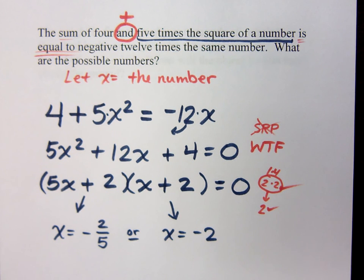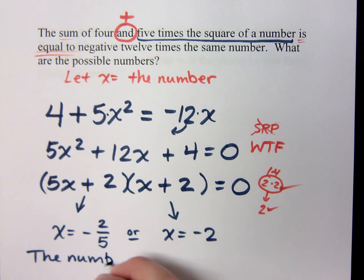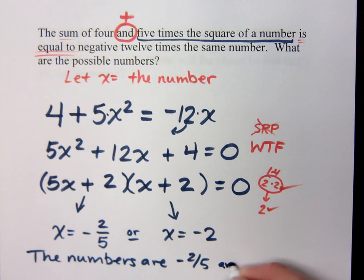And there's no real-world problem that I have to really think about and concern myself with. Like, can I have positives? Can I have negatives? It doesn't really matter. These guys are both just numbers. So we state our answer, and we just say that the numbers are negative 2 fifths and negative 2.